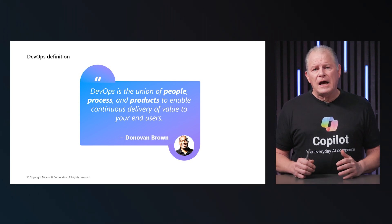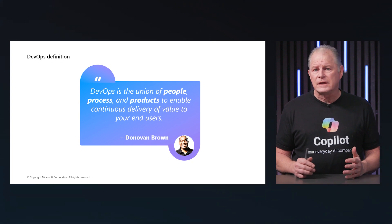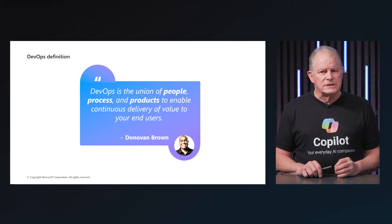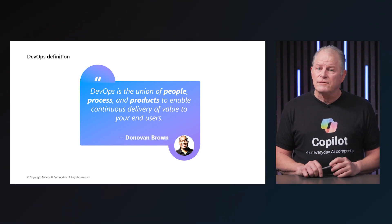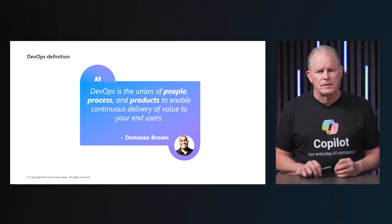The people aspect highlights the importance of collaboration and communication among all stakeholders involved in the software development lifecycle. This includes developers, operations teams, security, quality assurance, and even the business stakeholders. The goal is to break down silos and foster a culture of shared responsibility and continued improvement.